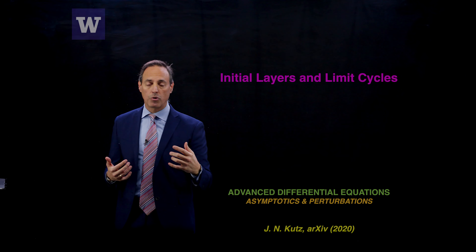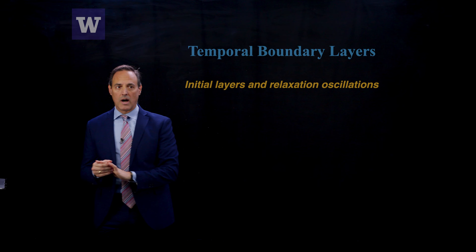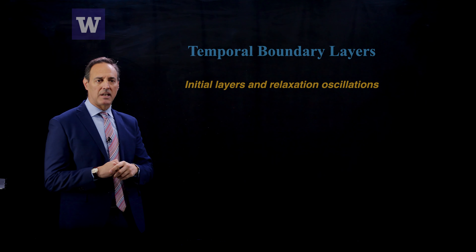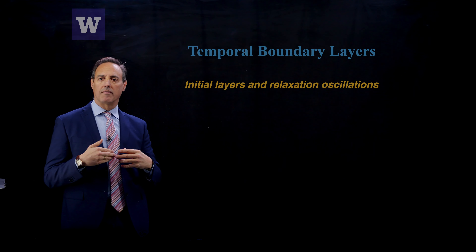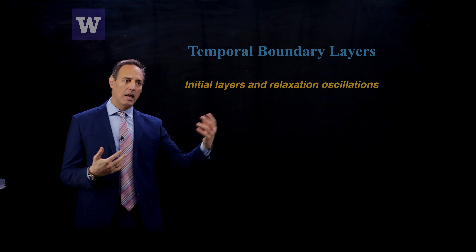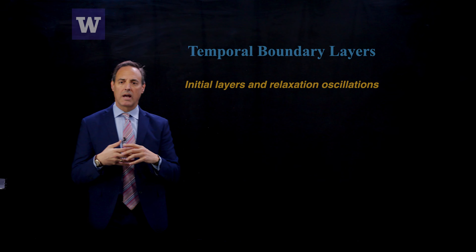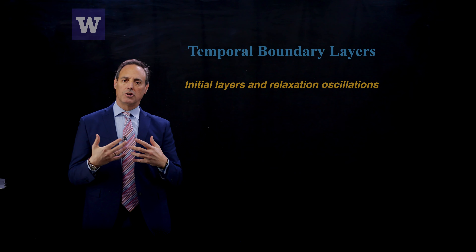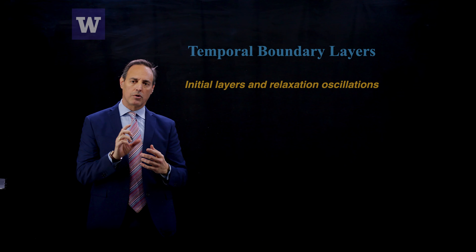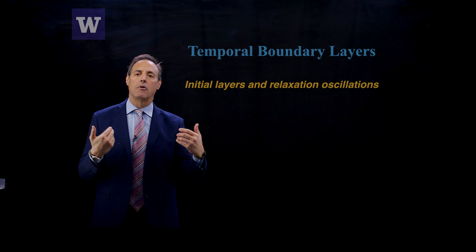I'm going to show this in the context of a limit cycle problem — temporal boundary layers. This can happen when you have an initial layer, a very rapid transition at the beginning of the dynamics, and also in what's often called relaxation oscillations, where a strongly nonlinear oscillator produces dynamics that change rapidly over a short period of time and then have slow dynamics followed by another rapid transition.